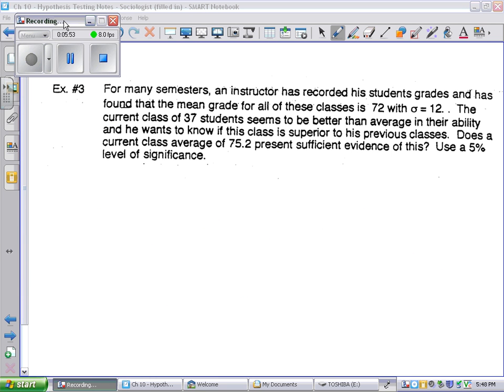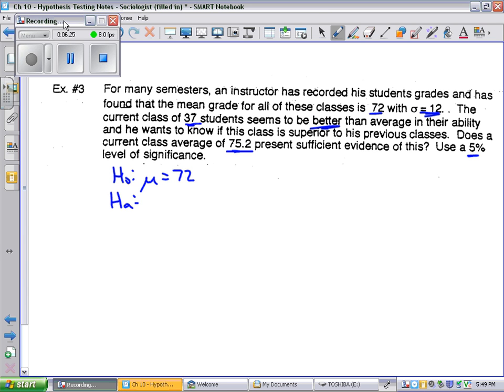Example 3, I don't know where example 2 went. It disappeared. For many semesters, an instructor has recorded his students' grades and has found that the mean grade for all these classes is 72 with sigma 12. The current class of 37 students seems to be better than average in their ability, and he wants to know if this class is superior. Does this average present sufficient evidence at the 5% significance level? So my givens, he posits that mu is 72, and HA is my class better. Now, a trick here is defining mu. I know that in the past the mean was 72. The question is, is this class 72, or is this class better than 72? So where mu is the true average for these current students.